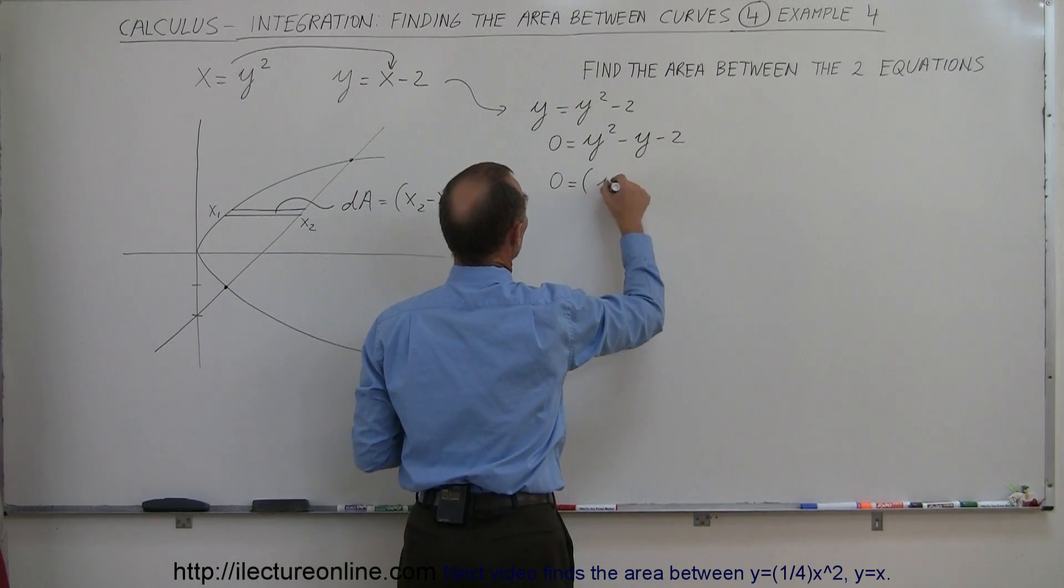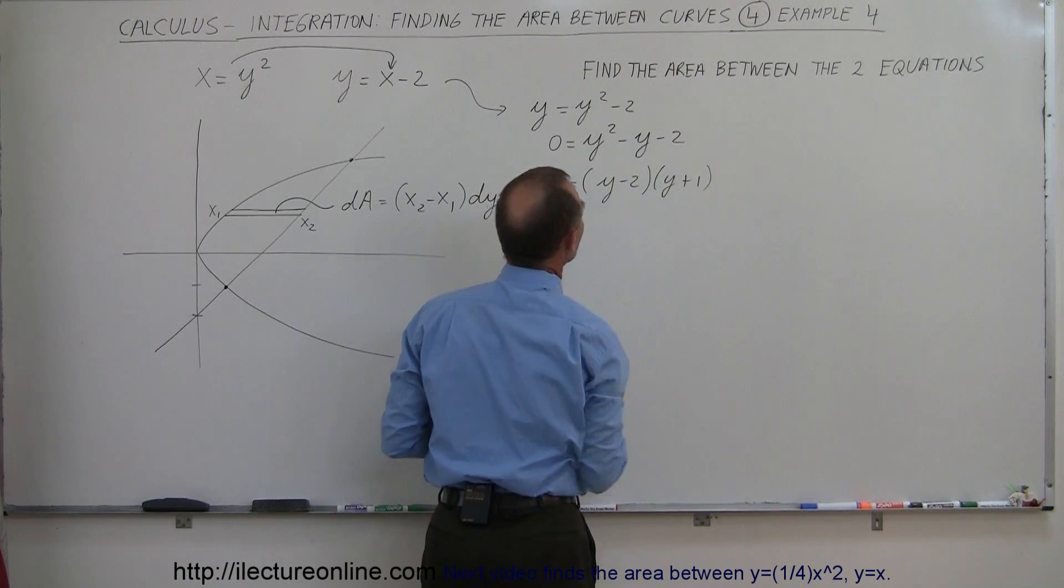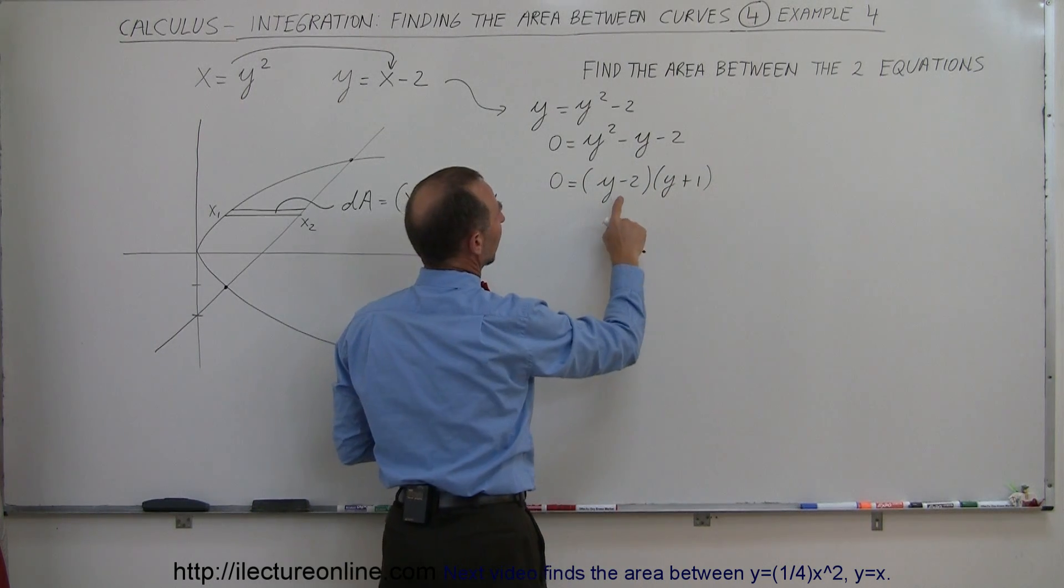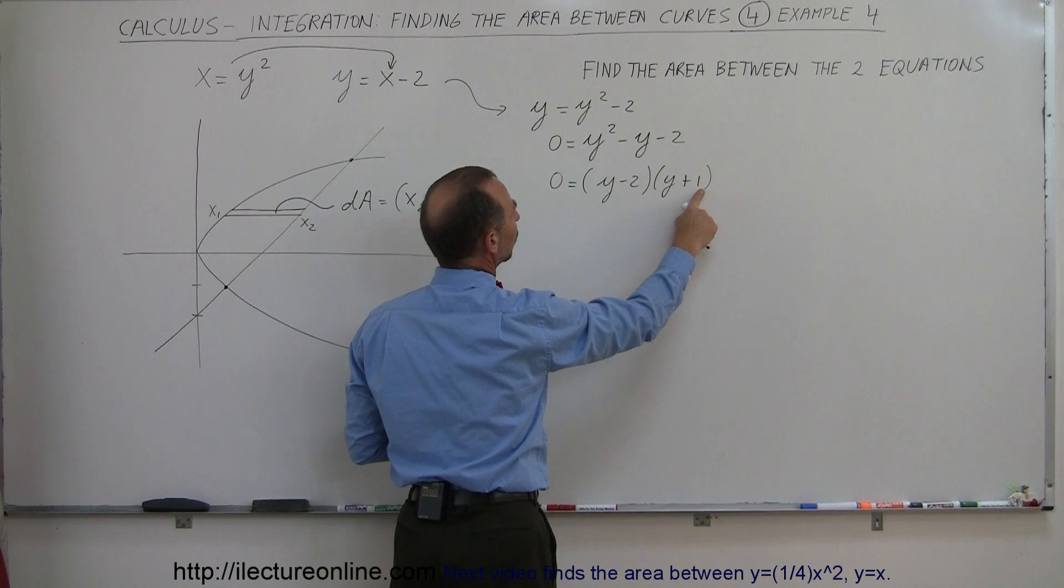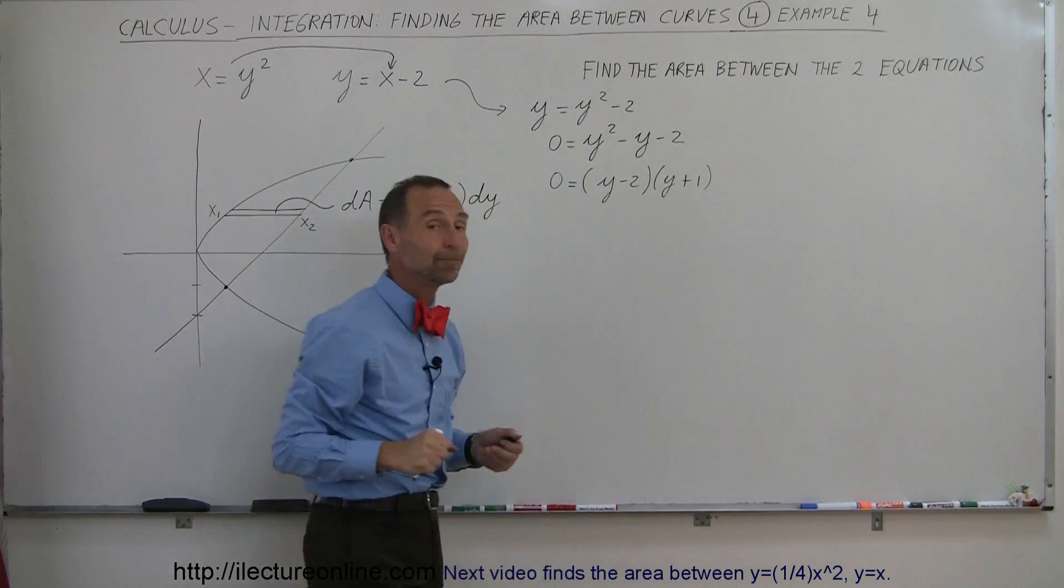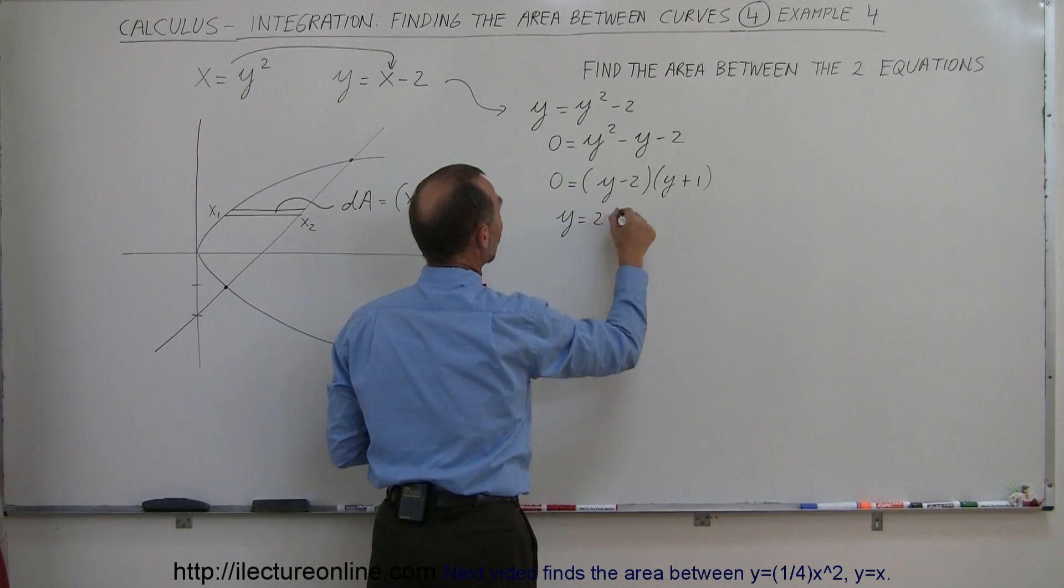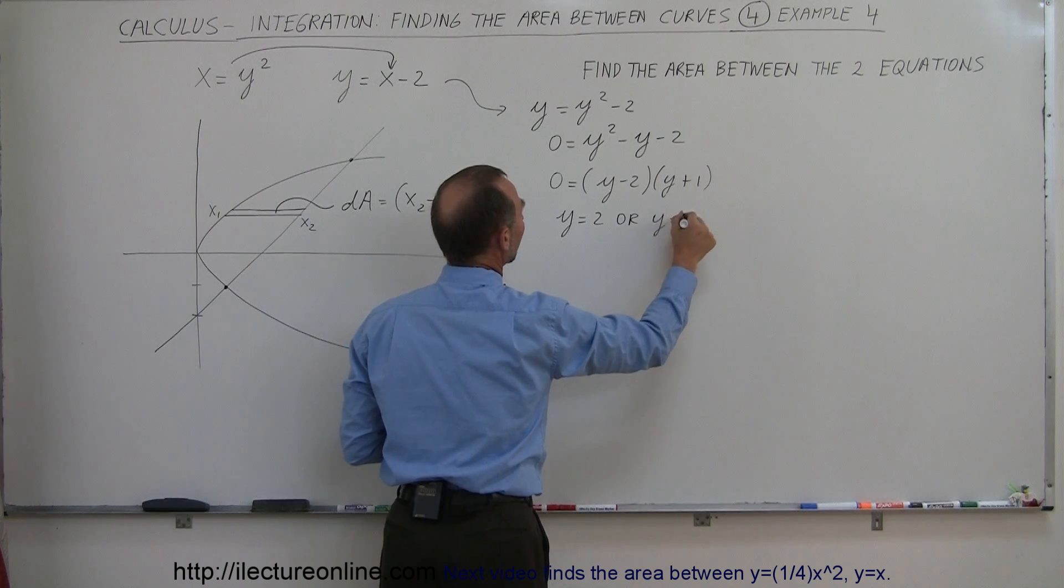So 0 is equal to, I get y minus 2, and y plus 1. Let's see if that works. y times y is plus y squared, that's minus 2y, that's minus y, that's minus 2. Looks like it's a go. All right. That means in the first case, we have y is equal to 2, or y is equal to minus 1.